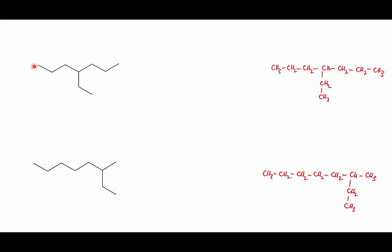This one has seven carbons and they're all single bonds, so we know that the base of the name is going to be heptane. There's one branch and the branch has two carbons, so the name of the branch is ethyl.